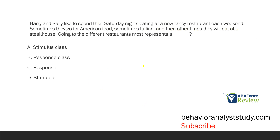Harry and Sally like to spend their Saturday nights eating at a new fancy restaurant each weekend — sometimes American food, sometimes Italian, and other times a steakhouse. Going to the different restaurants most represents a what? They're going to all these different restaurants, and what is that demonstrating? We know they like to go out to eat at these fancy restaurants. Going to all these different restaurants — which would be our stimuli — all serve the same function: they go eat, they're going out, they're having fun. All the responses are serving the same function.